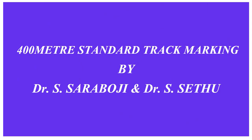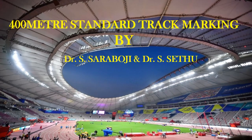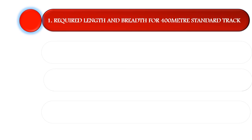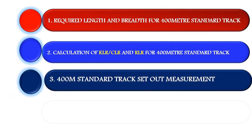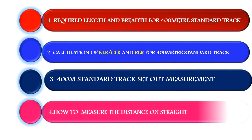Hi viewers, welcome you all to our YouTube channel. Thank you for your support. This video explains the required length and breadth for a 400 meter standard track, the calculation of Curb Line Radius (KLR) and Running Line Radius (RLR) for a 400 meter standard track, set out measurement, and how to measure the distance on stride.